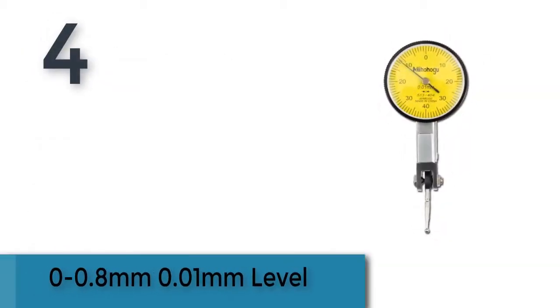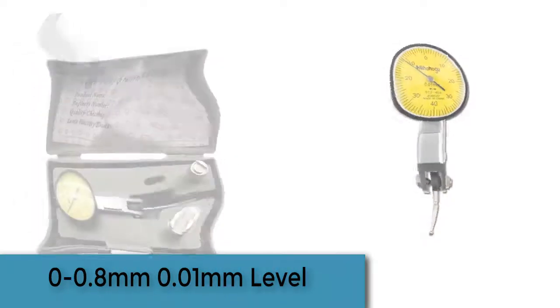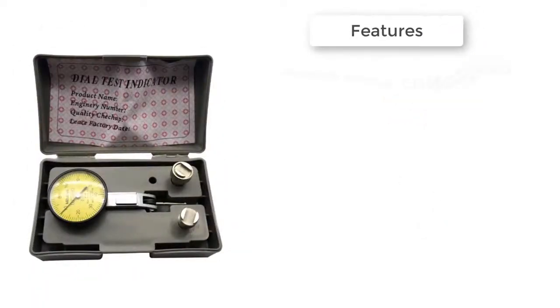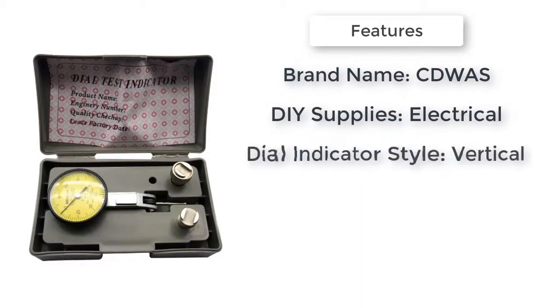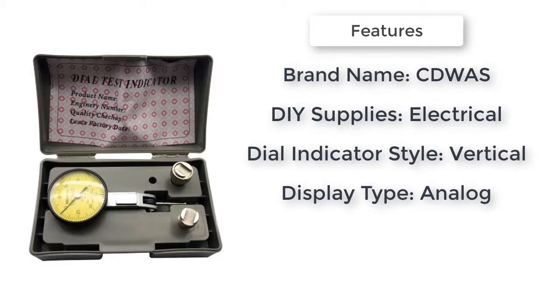The item number four is zero to 0.8 millimeters to 0.01 millimeters level. Accurate and convenient measurement of narrow or concave objects that a dial gauge is difficult to measure, the size of internal and external diameter.